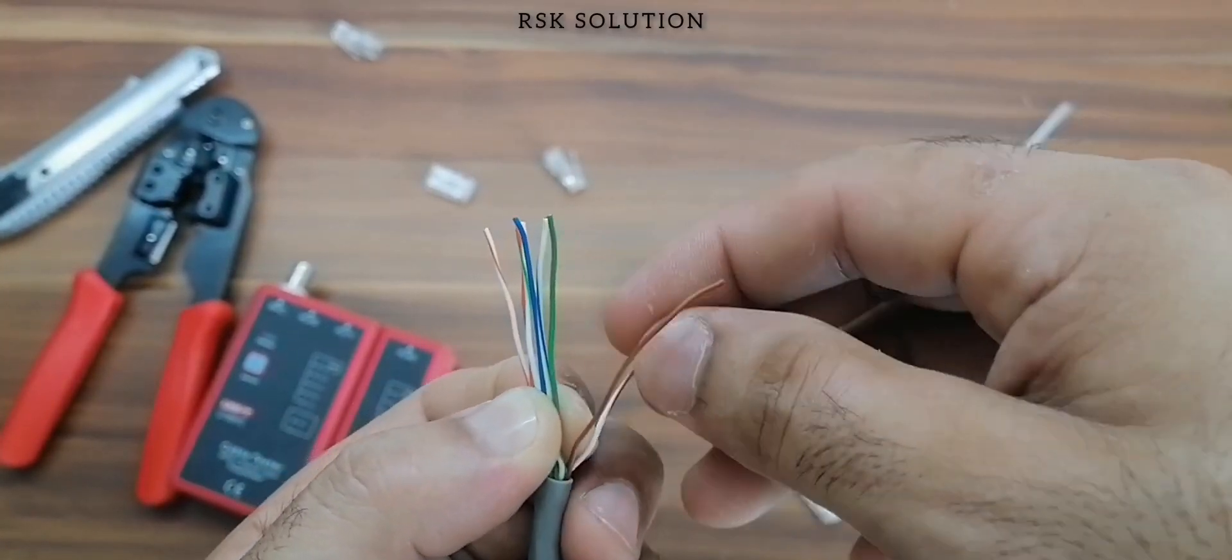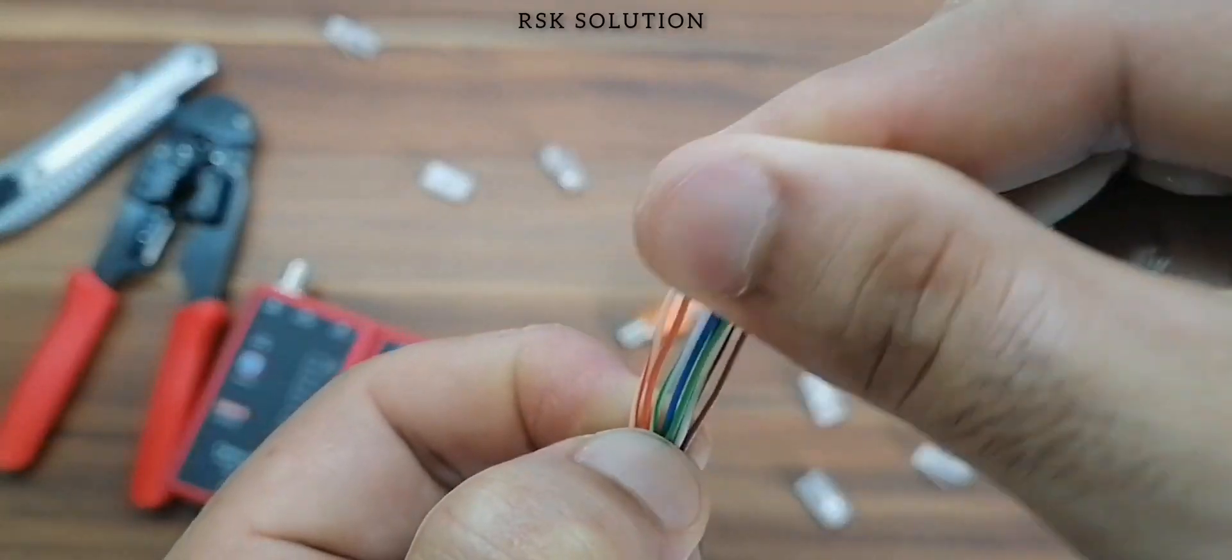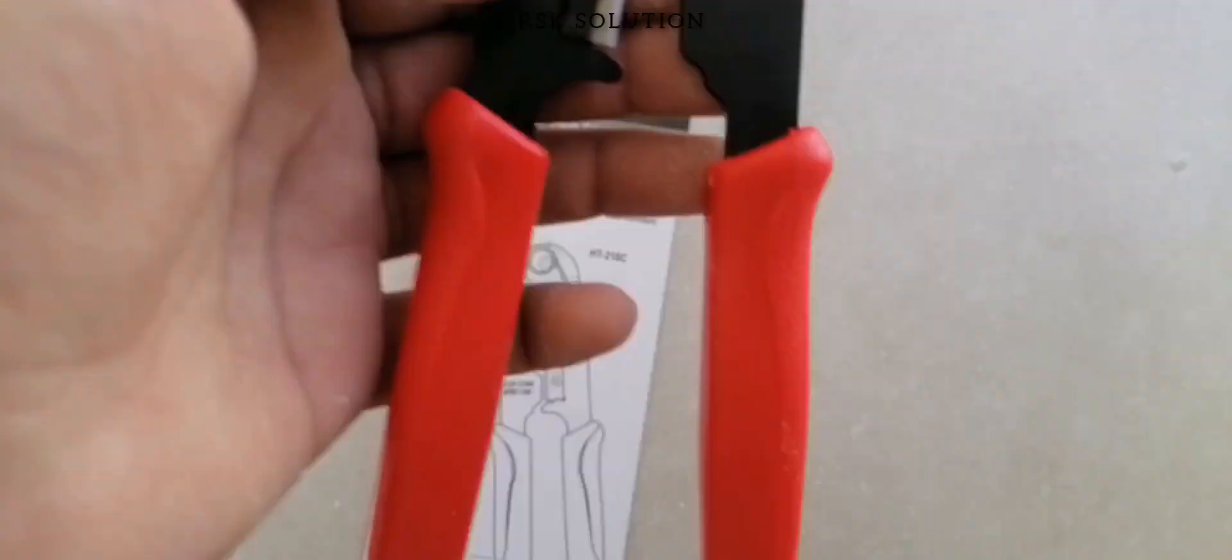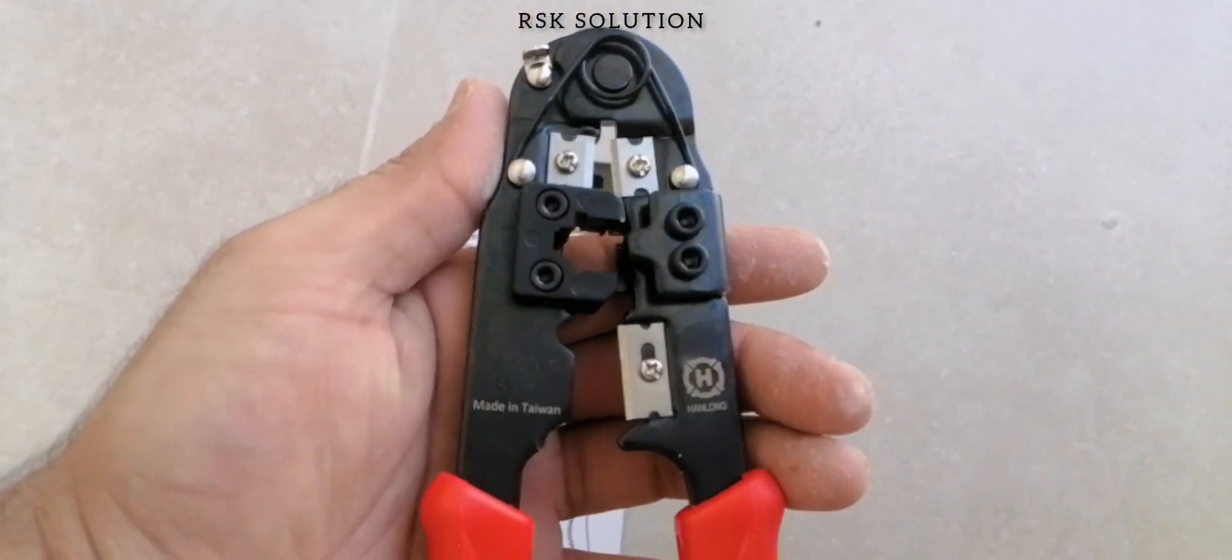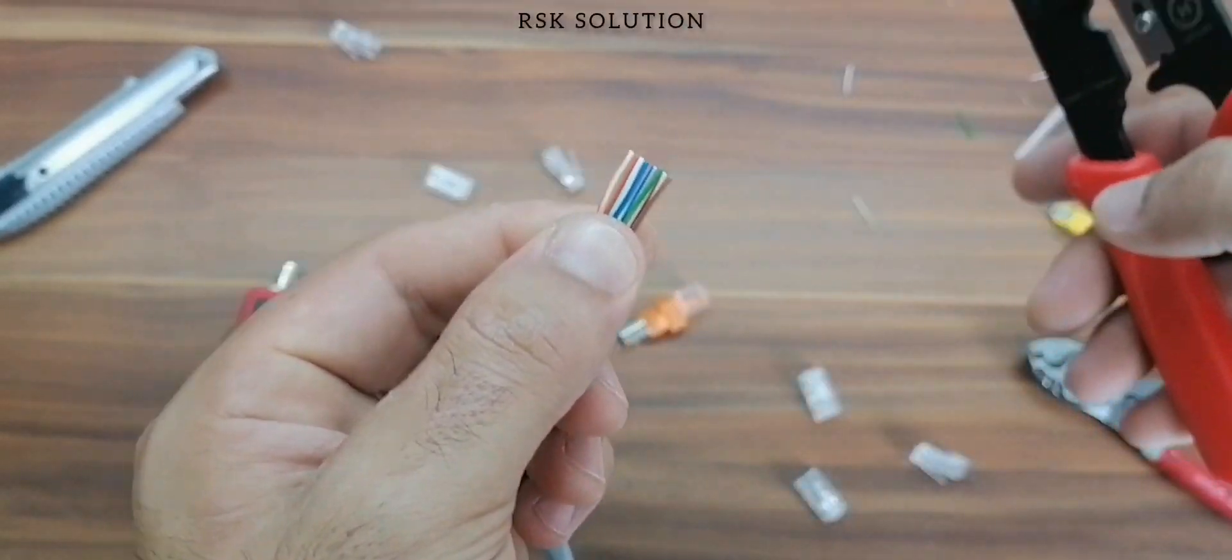So you can make them one by one, all of the wires in the sequence, how you have in the picture and pull them like this. Now, you need a crimping tool to crimp them. As you can see I have in my hands, first you need to cut a bit extra wire.